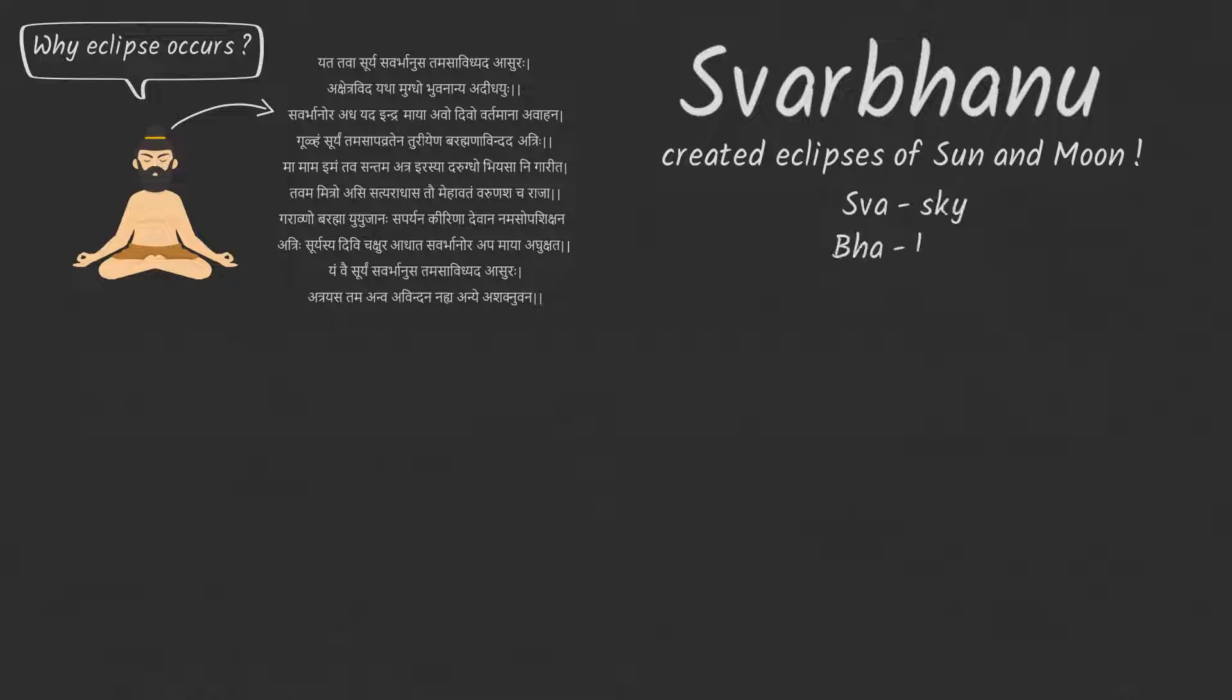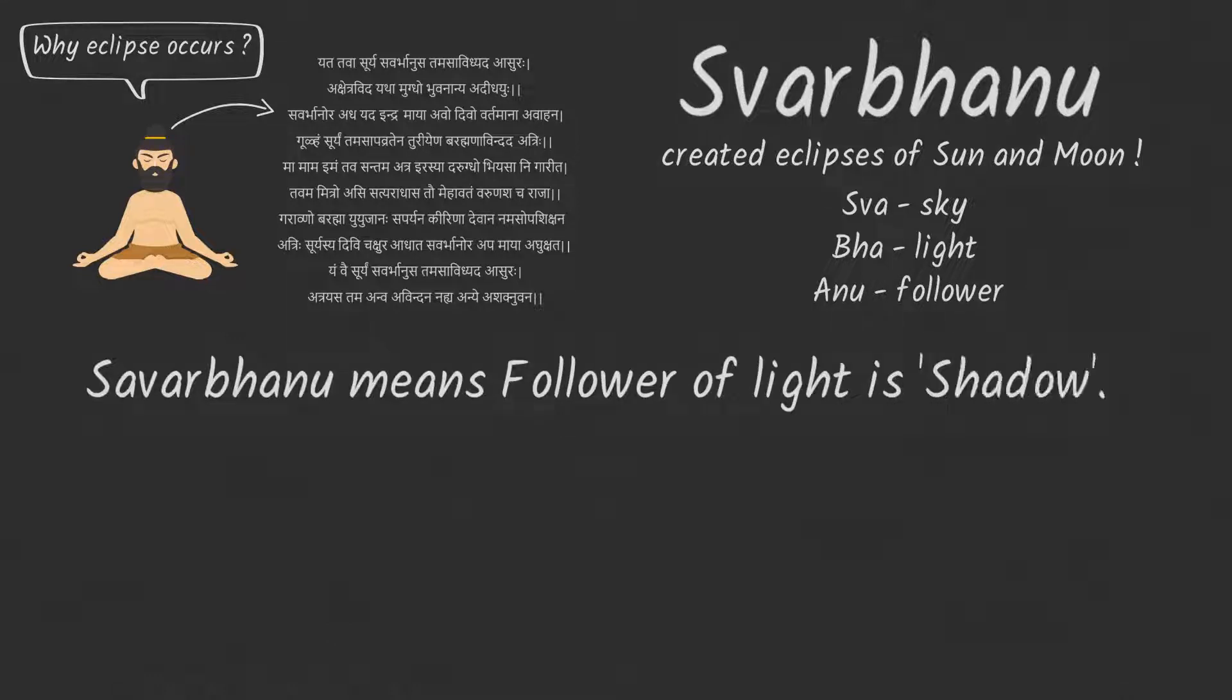Swa means sky, Ba means light, Anu means follower. Swarvanu means follower of light - a shadow which is present in the sky. Eclipse is seen due to this shadow. Asuras stand for the shadow of moon, not for the demon.